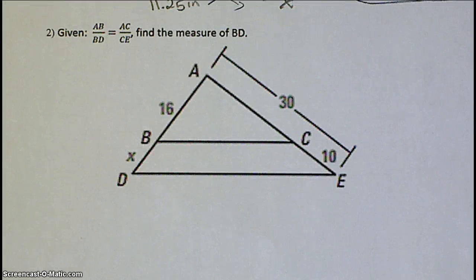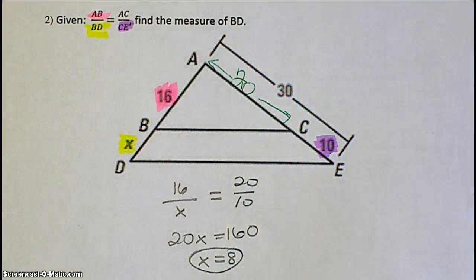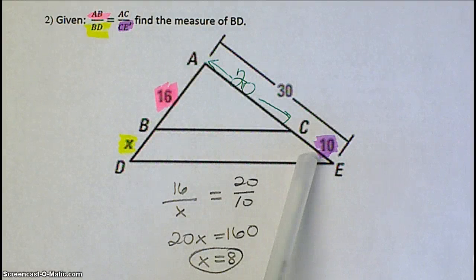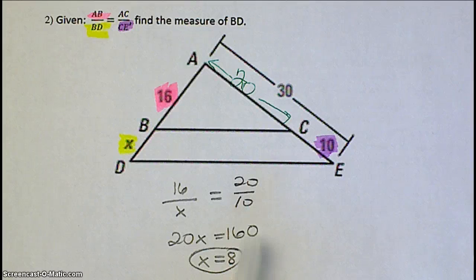This is a diagram that's given to you and also the proportion is provided to you. So, you should be able to plug in the numbers and then figure out that missing side for BD. And the only thing you really had to do in this one was figure out the length of AC by subtracting 30 from 10 and then plug in 20 for AC. You should get that BD is equal to 8.